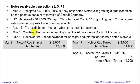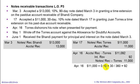Then on May 1st, we wrote off the Torres account against the allowance for doubtful accounts because we couldn't collect it. The interest calculation is $11,000 times 10% times 30 over 360, which is $92 interest. On May 1st, we're going to write this Torres account off against the allowance for doubtful accounts.